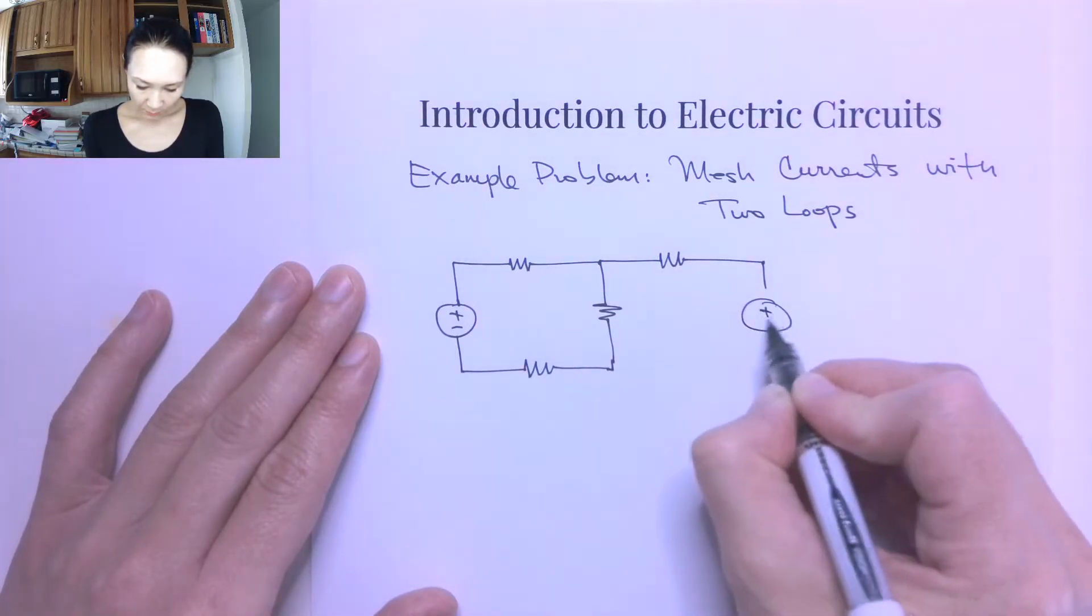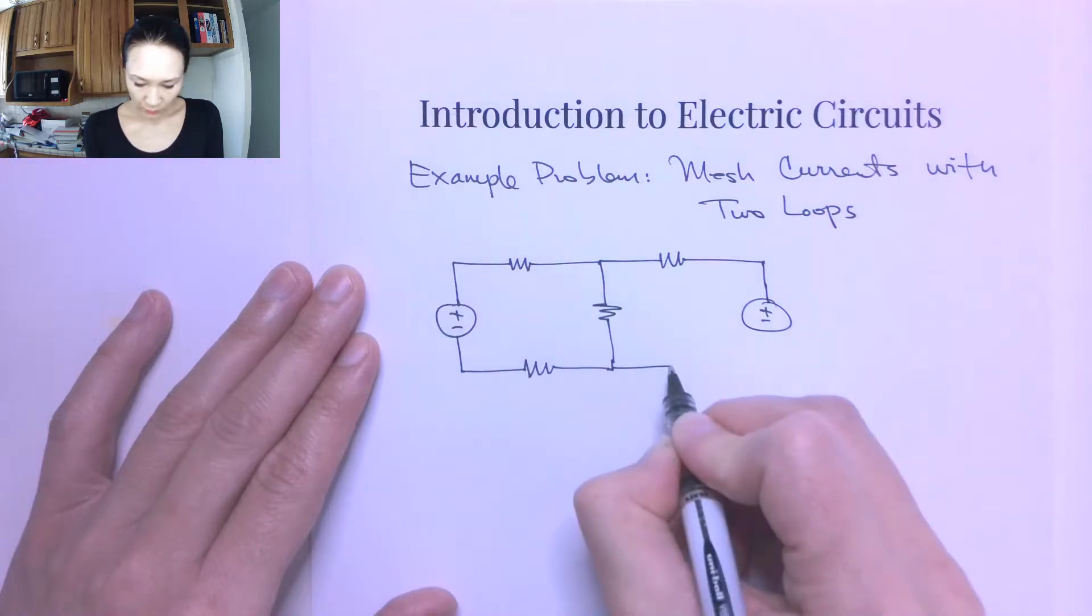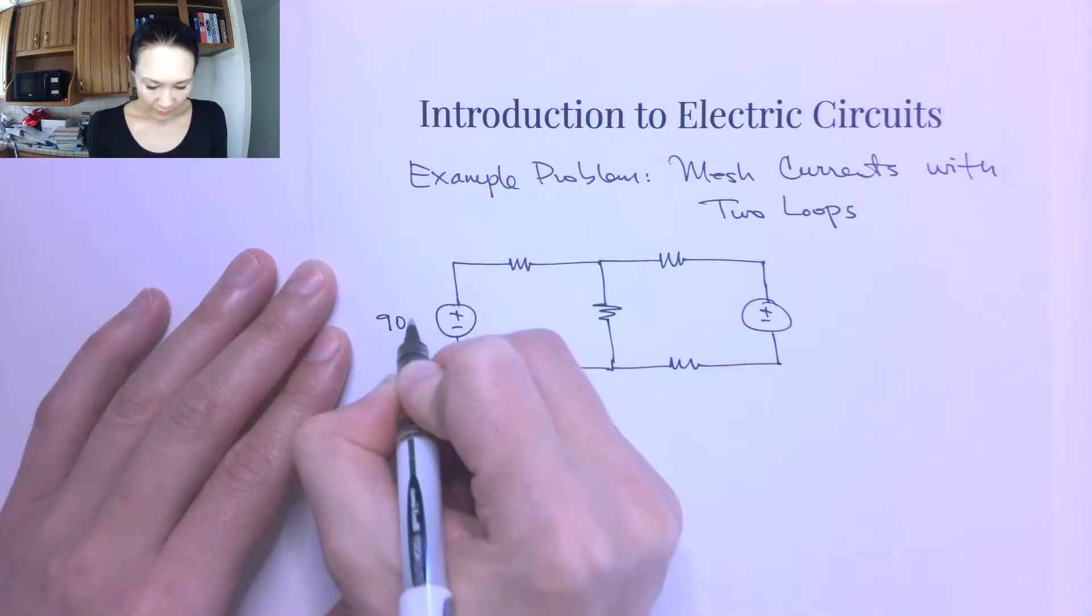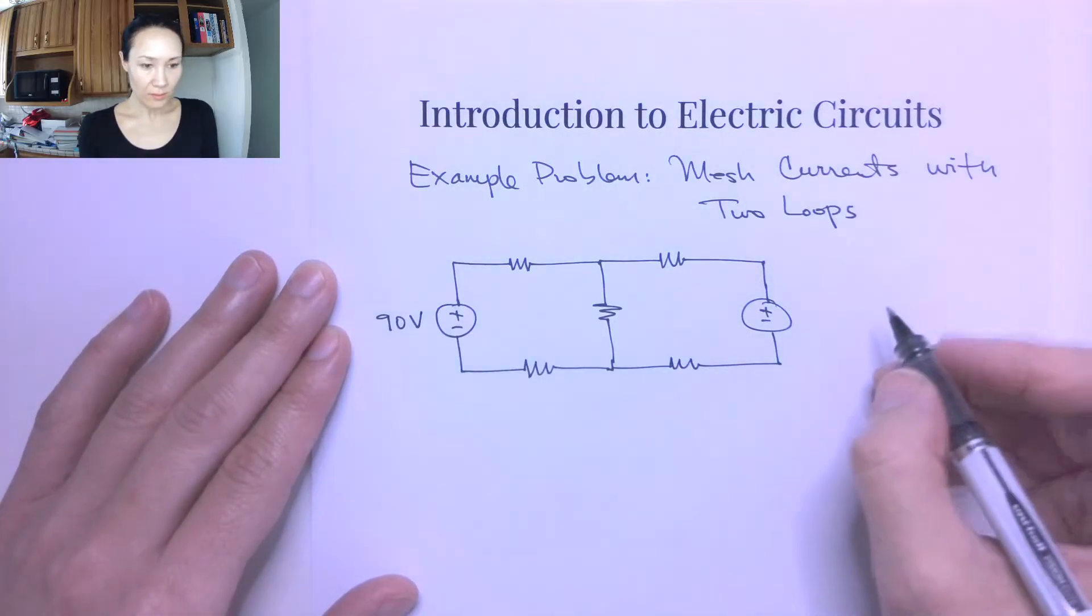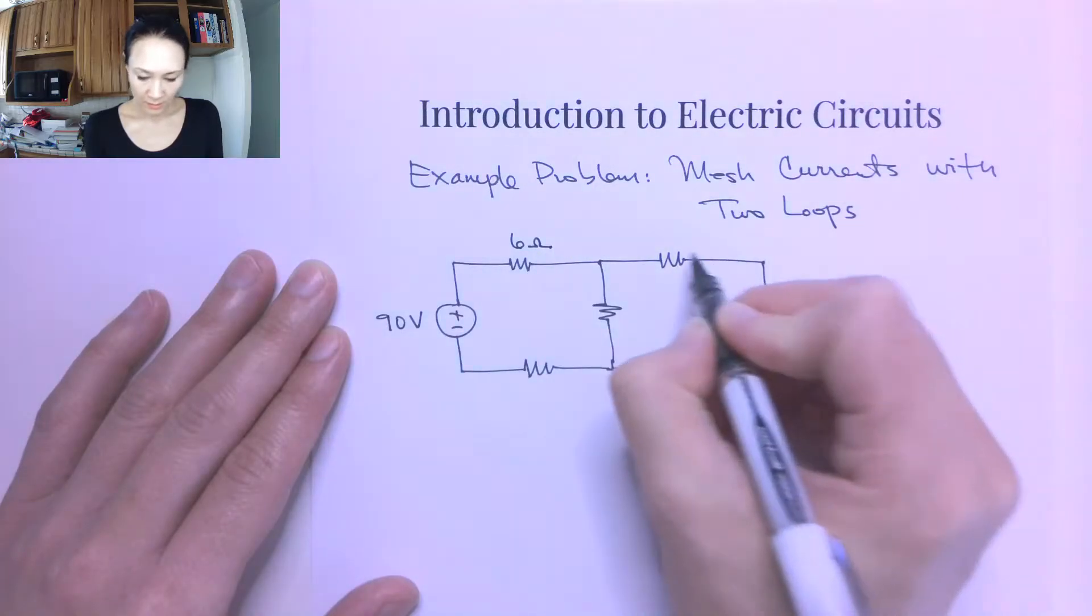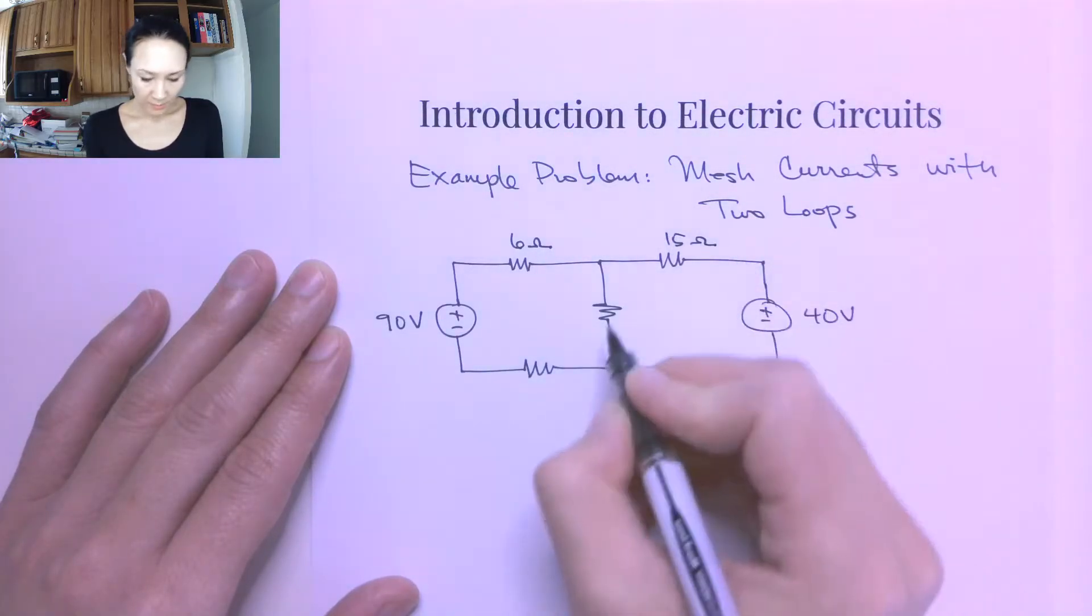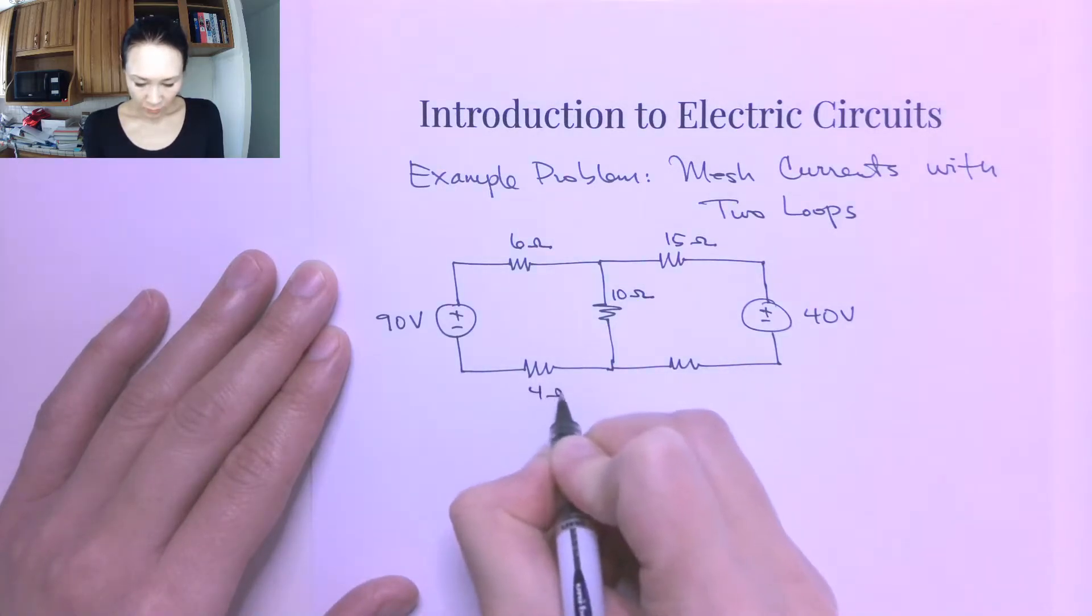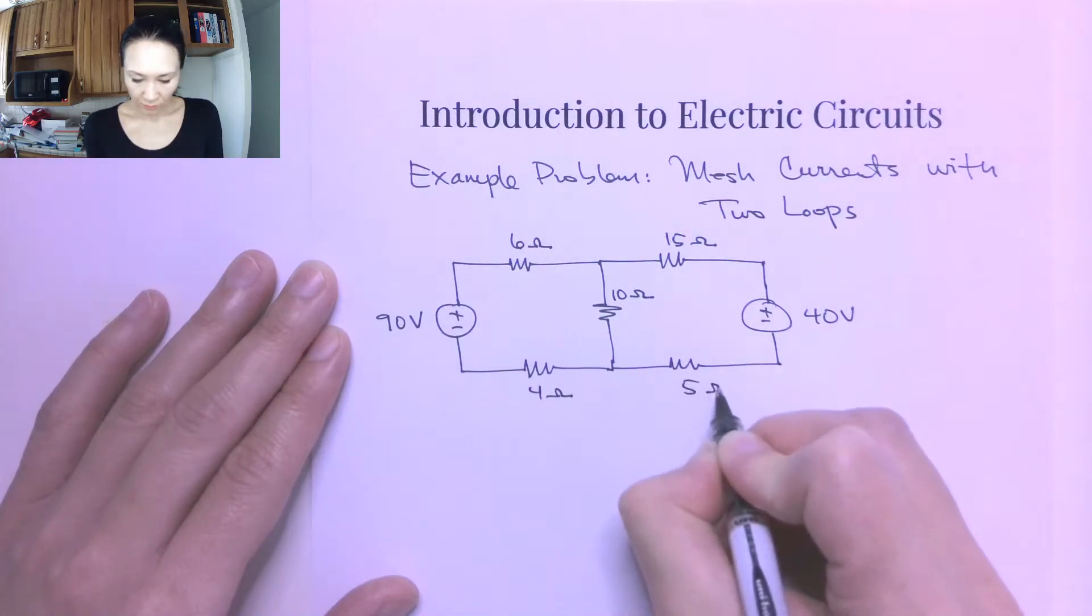So I'm going to go ahead and put in two voltage sources here. This voltage source on the left-hand side, we'll let that be 90 volts. This one will be a 40 volt source. We'll let this resistor be 6 ohms, 15 ohms. Here's a 10 ohm resistor. This is a 4 ohm resistor, and this is a 5 ohm resistor.